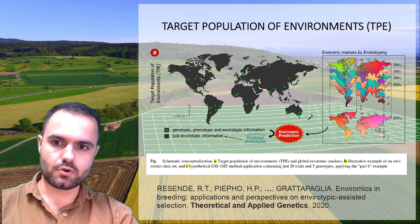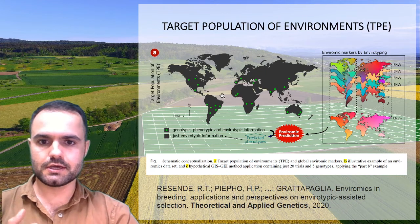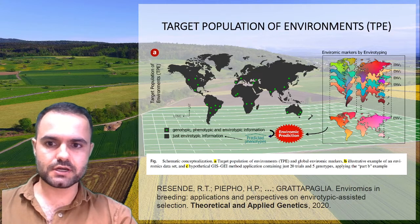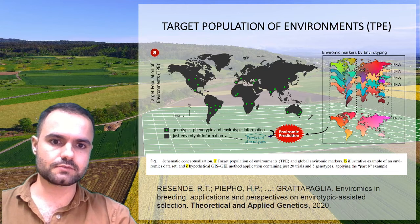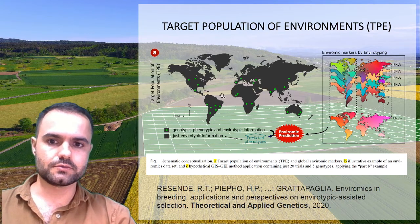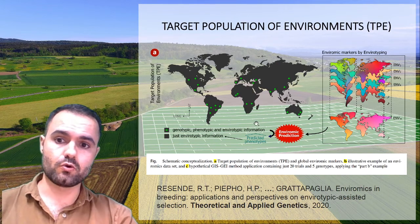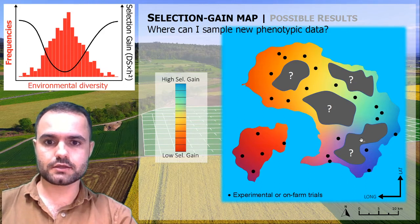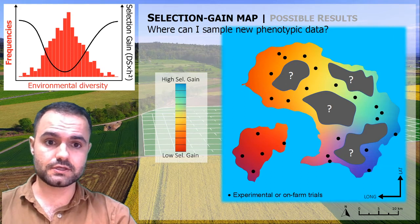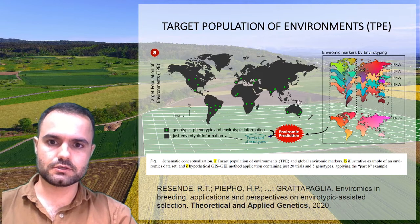Now, more theoretical concepts: the Target Population of Environments (TPE) refers to the sites where breeding is done or the local markets that breeding aims to serve. The TPE could be spread across a whole distribution or be local — like islands, continents, countries, or even a company's area — and we need to evaluate sites accordingly.